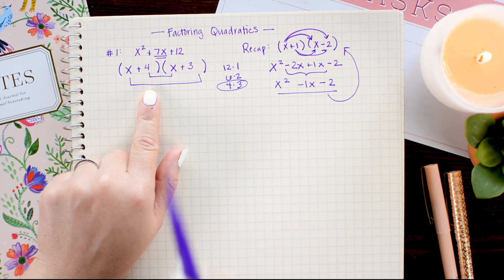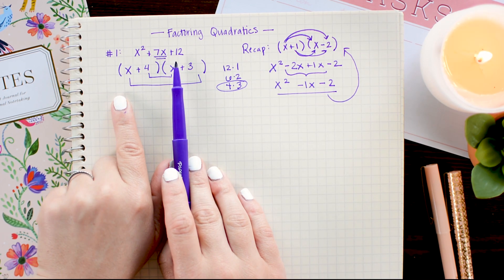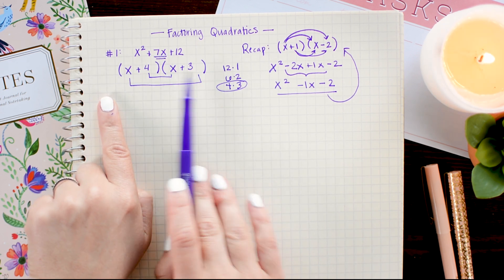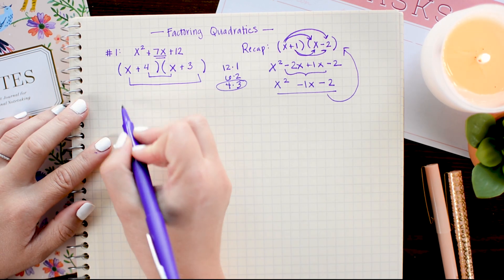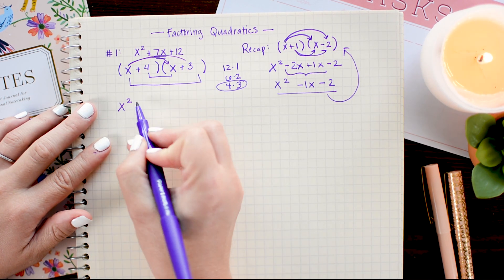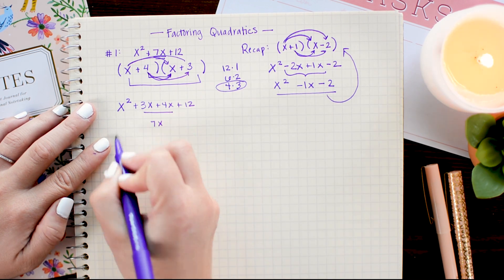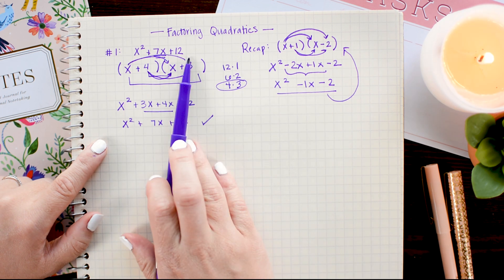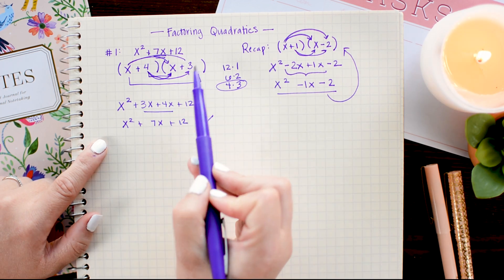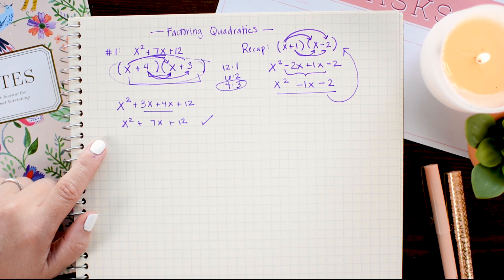Now we have factored out x squared plus 7x plus 12. And if you're a beginner at this, I would recommend foiling this back out to make sure that I got the correct factorization. So it multiplied back to our original. So that confirms that x plus 4 times x plus 3 is the correct factorization.